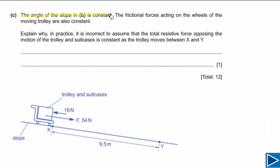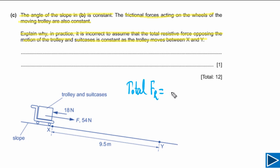For part C, the angle of slope is constant and frictional forces on the wheels are also constant. We need to explain why it is incorrect to assume that total resistive force is constant as the trolley moves between X and Y. Total resistive force equals friction plus air resistance.